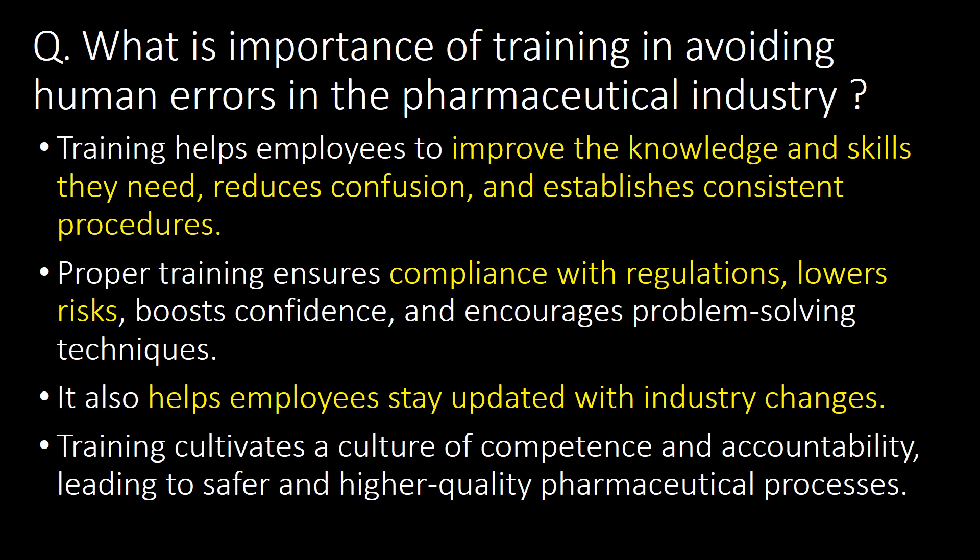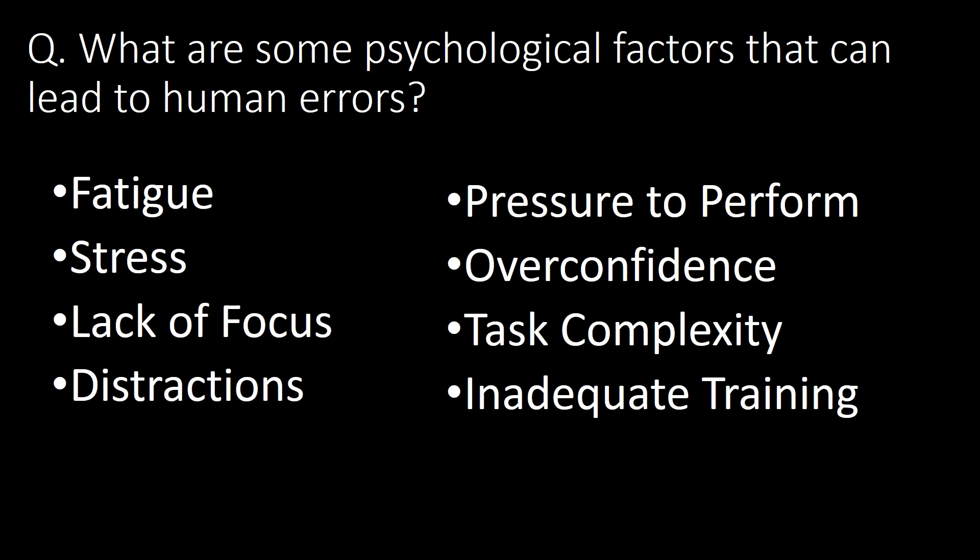What is the importance of training in avoiding human errors in the pharmaceutical industry? Training helps employees improve the knowledge and skills they need, reduces confusion, and establishes consistent procedures. Proper training ensures compliance with regulations, lowers risk, boosts confidence, and encourages problem-solving techniques. It also helps employees stay updated with industry changes and cultivates a culture of competence and accountability, leading to safer and higher-quality pharmaceutical processes.